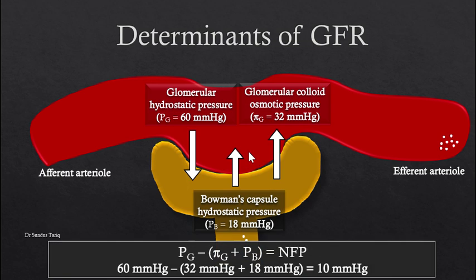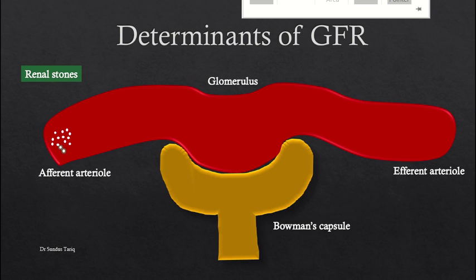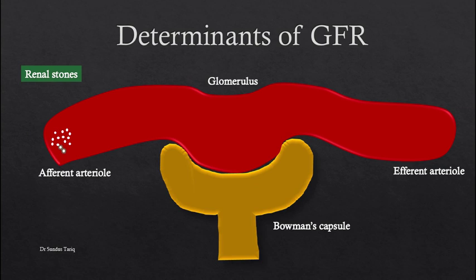To calculate the net filtration pressure, we sum up the forces acting in one direction and subtract the forces acting in the opposite direction. The net filtration pressure is around 10 millimeters of mercury, meaning there is net filtration of fluid from the glomerulus into the Bowman's capsule.